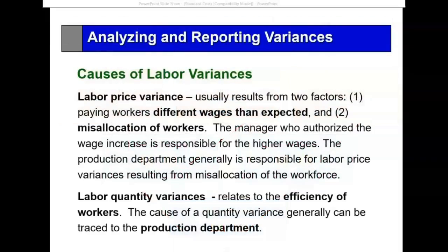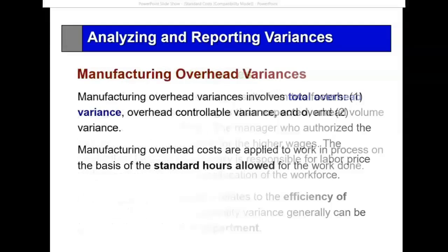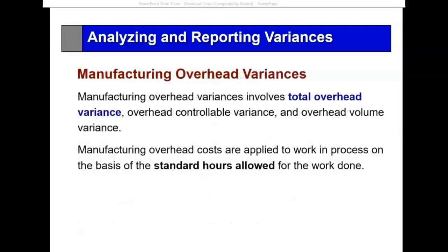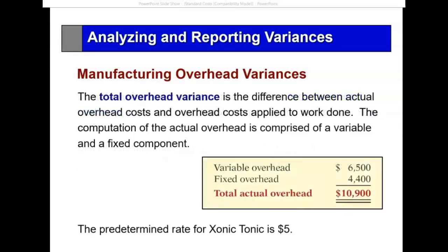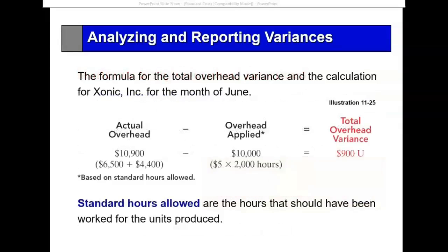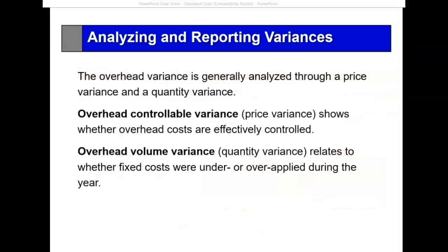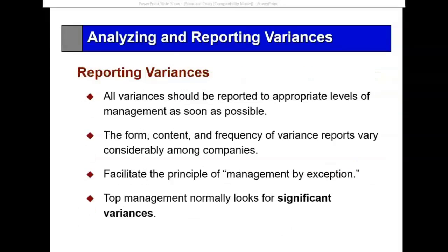Why? Two factors: we paid different wage rates for different employees — we misallocated the workers. For the quantity variance, the efficiency of the workers should be looked into. Now manufacturing overhead — the variance is there, but we cannot use the matrix in analyzing that.